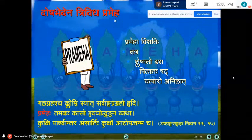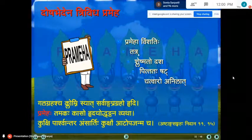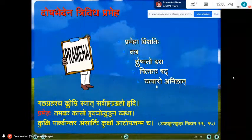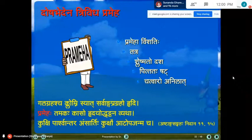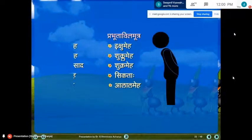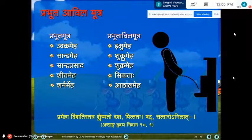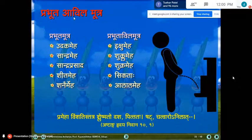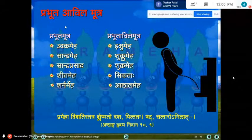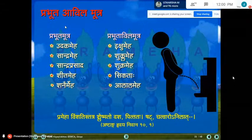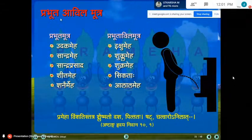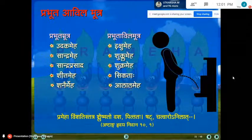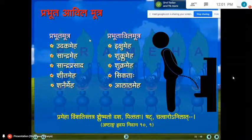Based on the dominant dosha — tridosha prameha, Sleshma (kapha) has 10 varieties, Pitta has 6 varieties, and Vata (anila) has 4 varieties — that is how the classification is made based on dominant dosha. As far as pratyatma linga is concerned, prabhuta mutra and avila mutra are considered the characteristic signs of prameha. This pratyatma linga may not be present in all — in some varieties prabhuta alone is characteristic; in some, both prabhuta and avila mutra are present.